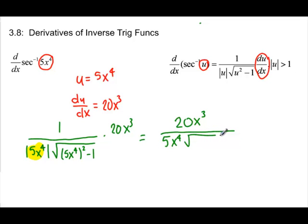And so what we can get out of that guy then is 5x to the 4th. So you have to pay attention on that, because there will be instances where we have to leave the absolute value signs in. Square out the inside here, 25x to the 8th minus 1.